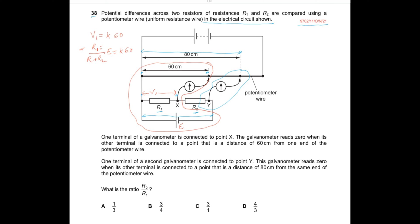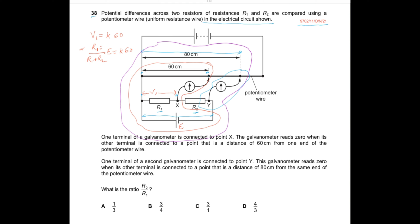Then we consider the other balance condition. If we consider the whole circuit, what happens is V2 — the voltage across the whole thing — equals k × 80. And this whole V2 is simply equal to E, so E = k × 80.